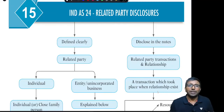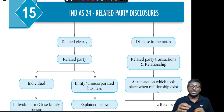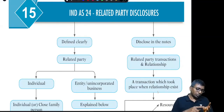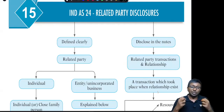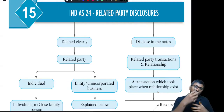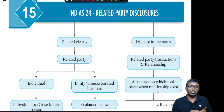Who is a related party? A related party can be an individual, or an entity or unincorporated business. For an individual, it means the individual or his close family member who has control or joint control over the entity — that is, who has more than 51% (50% is conflicted). He himself, or together with close family members, having more than 50% constitutes control or joint control.